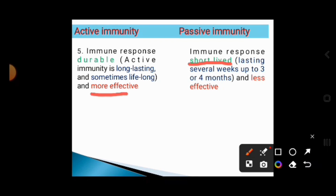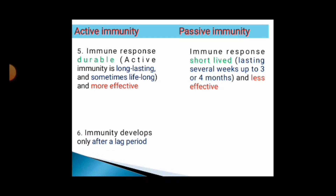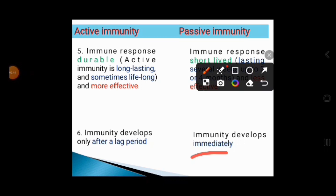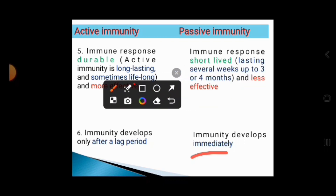Active immunity is more effective, whereas passive immunity is less effective. Active immunity develops only after a lag period, whereas passive immunity develops immediately, because it results from the introduction of ready-made antibodies. In active immunity, there is introduction of either a naturally induced pathogen or a vaccine — that is, weakened or killed microorganisms — that trigger the immune system to produce antibodies, creating a lag period.